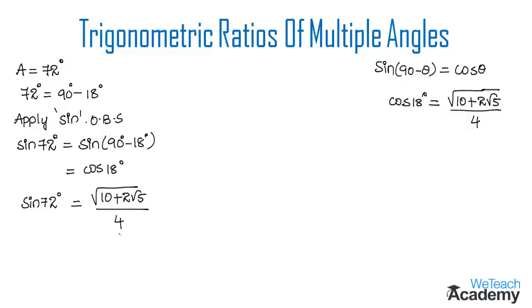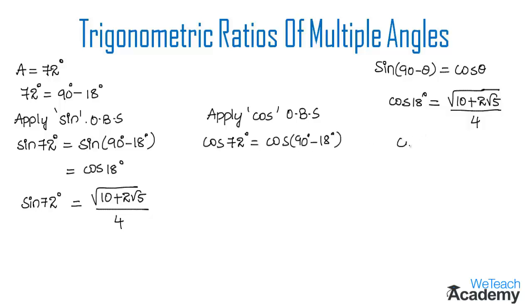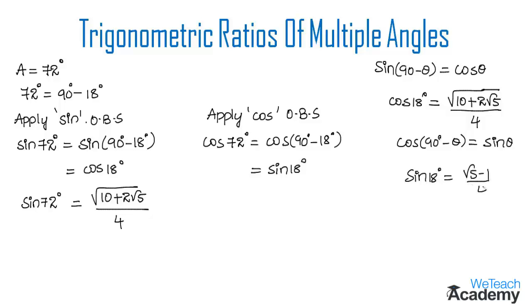Now let us find the value for cos 72 degrees. Applying cos on both sides, we get cos 72 degrees = cos(90 degrees − 18 degrees). We already know that cos(90 − θ) = sin θ, so here we get sine 18 degrees. We already derived the value of sine 18 in our previous videos, which is (√5 − 1) / 4. So (√5 − 1) / 4 is equal to the value of cos 72 degrees.